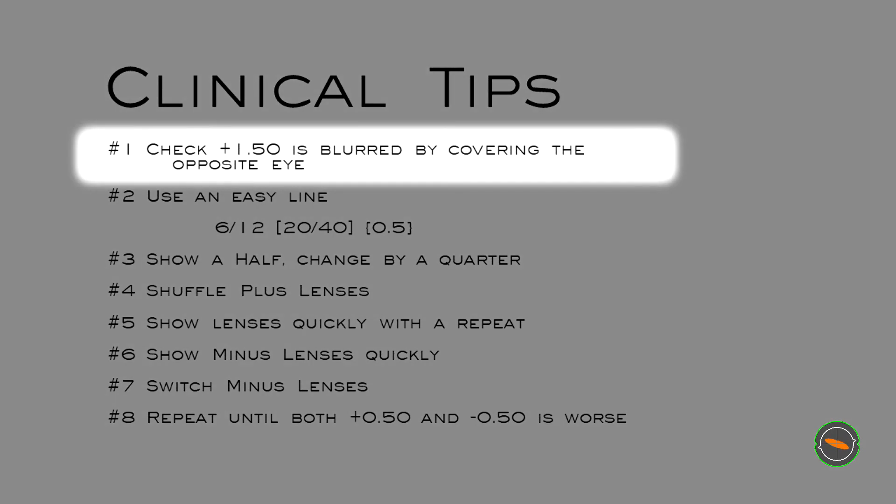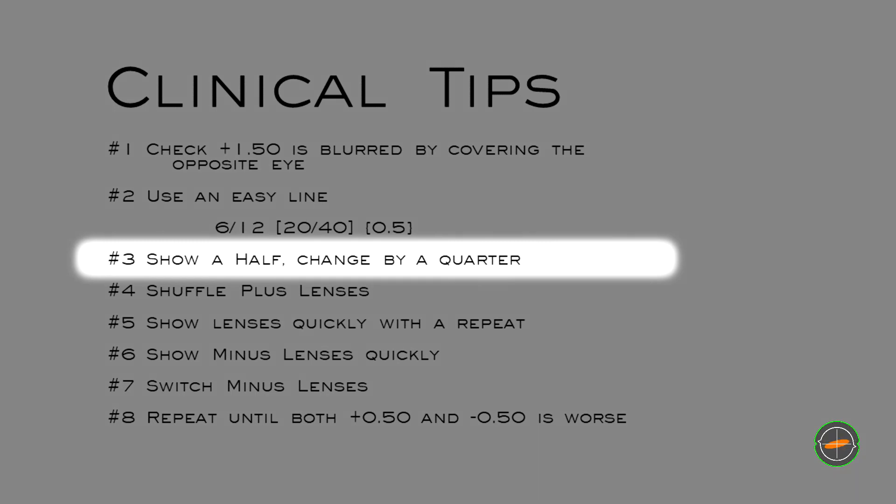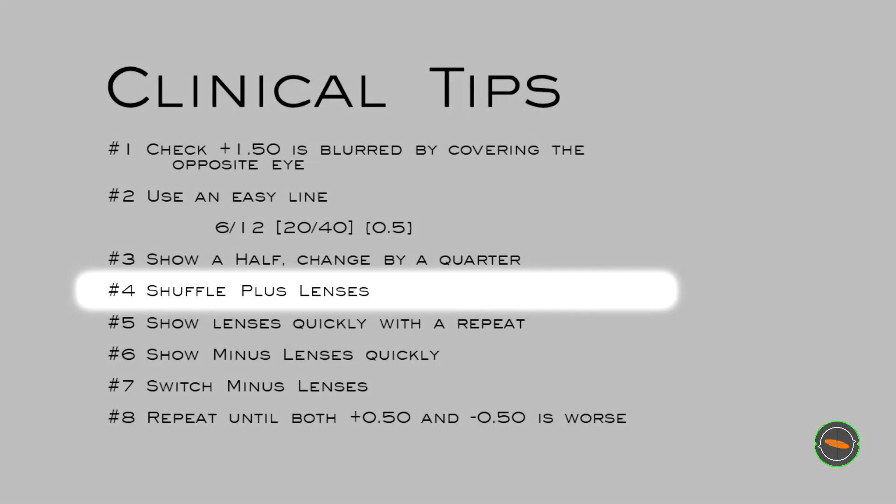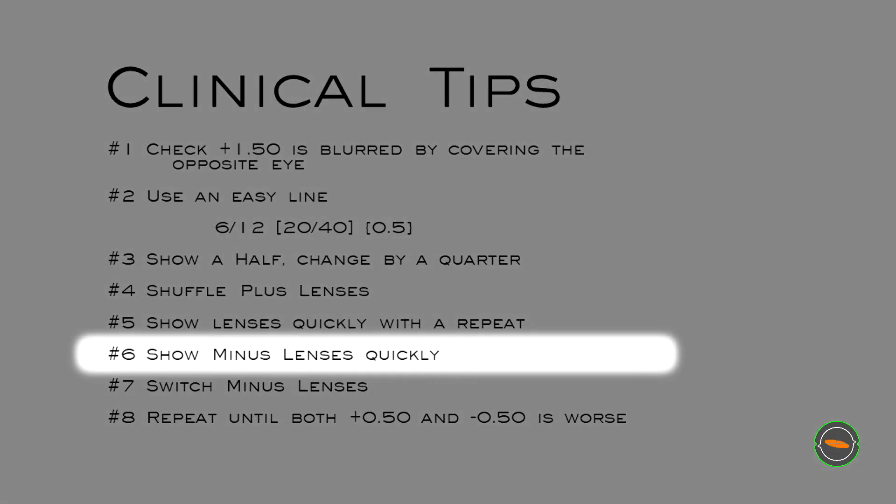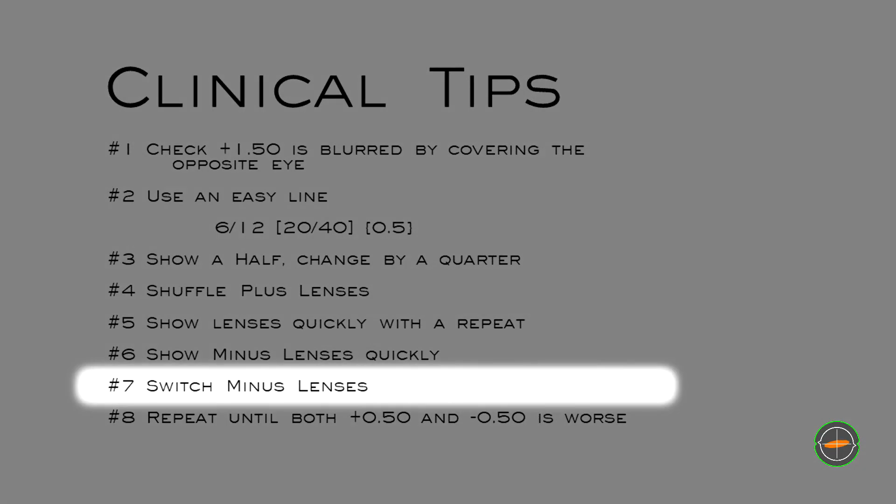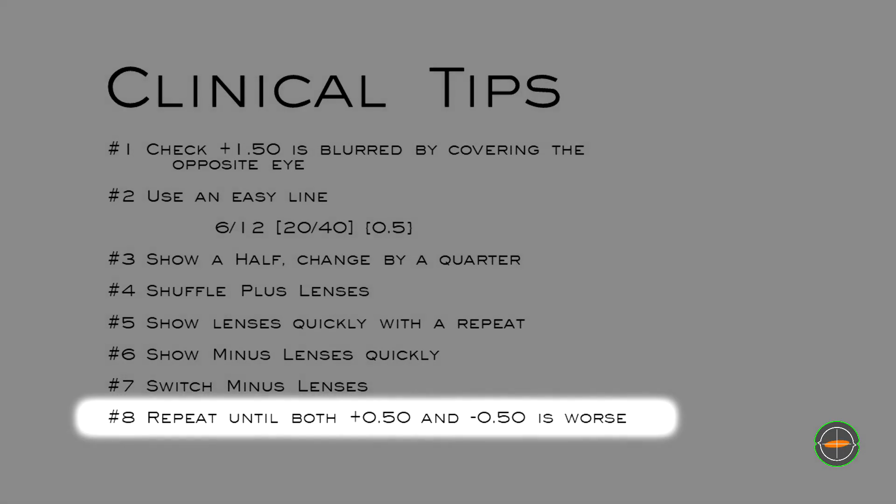So the clinical tips with this great technique are: Firstly, check plus 150 is blurred by covering the opposite eye. Secondly, use an easy line. 612 I like to use. Thirdly, show a half, change by a quarter. Fourth, shuffle plus lenses. Fifth, show lenses quickly with a repeat. Sixth, show minus lenses quickly. Seven, switch minus lenses. Eight, repeat until both plus 050 and minus 050 is worse.